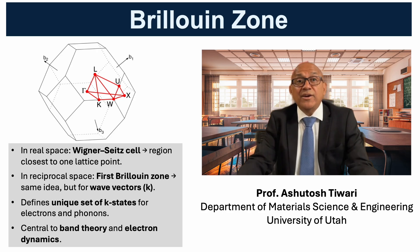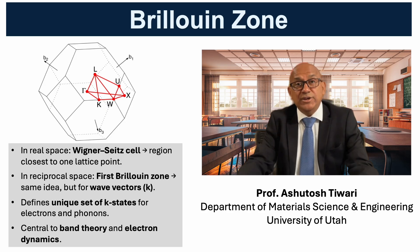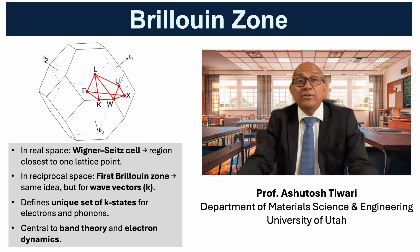It represents the fundamental region that contains all unique wave vectors or k-points for electron and phonon behavior in a crystal. Each point inside the zone corresponds to a possible electron momentum state. The boundaries of the zone play a crucial role in band formation because wave interference at those boundaries opens up energy gaps. So, the Brillouin zone forms the foundation of electronic band structure, linking the geometry of the lattice to the quantum states of electrons.